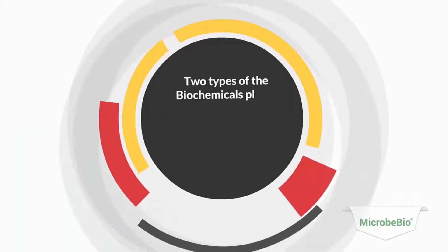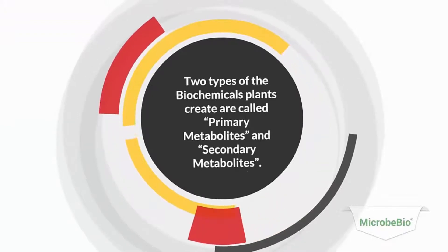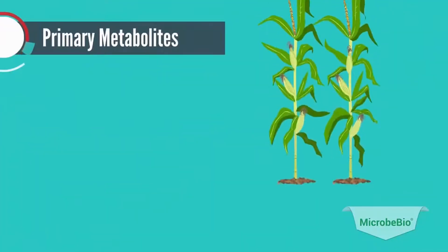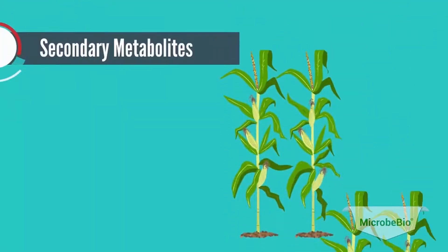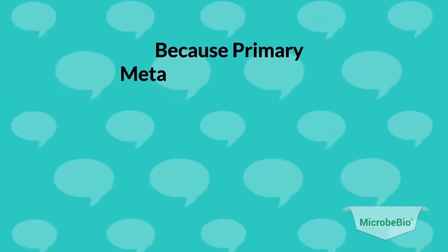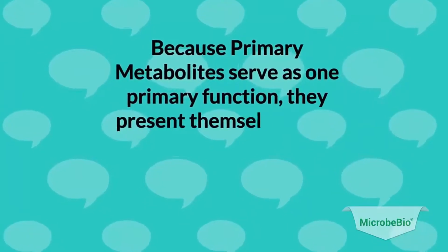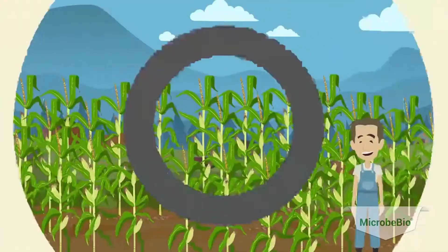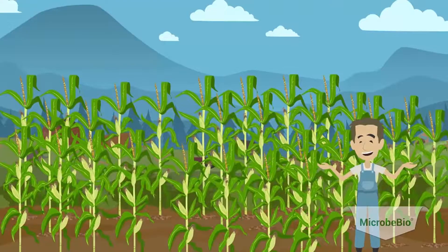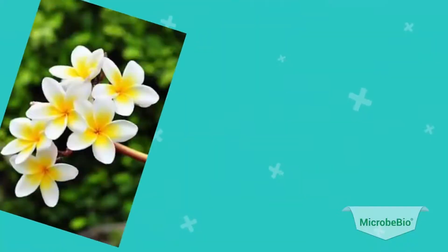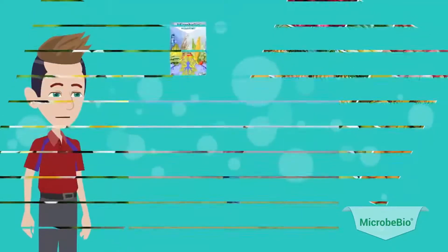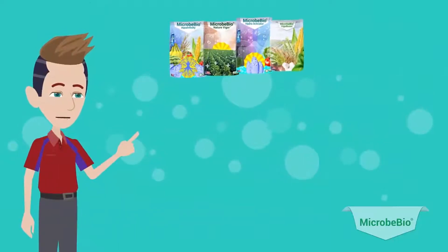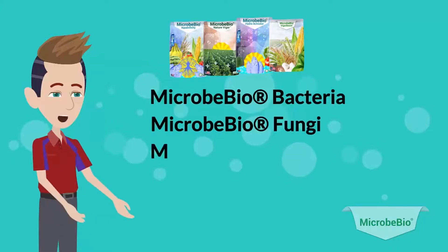Two types of biochemicals plants create are called primary metabolites and secondary metabolites. Primary metabolites are created and used by plants to aid in both growth and development, and they present themselves in all plants. Secondary metabolites are unique and the functions they serve differ between specific types of plants. Secondary metabolites can affect important aspects such as the smell of flowers, flavors of fruits, and most importantly, the health of the soil.